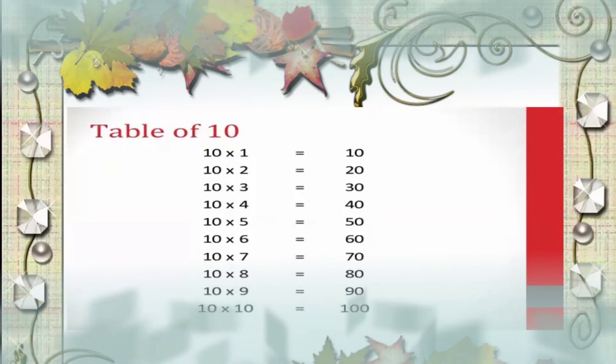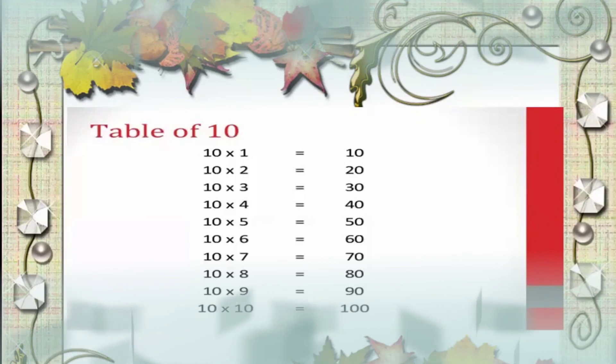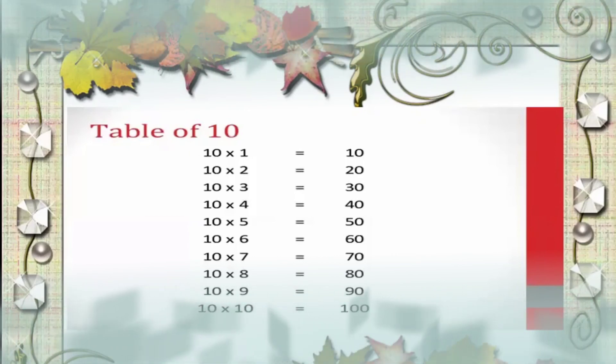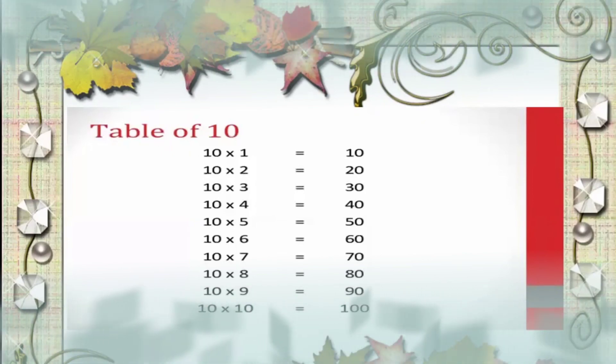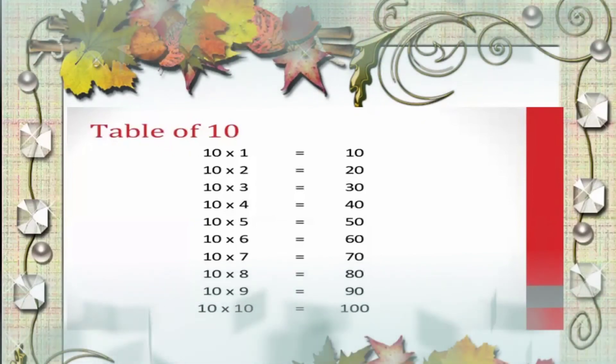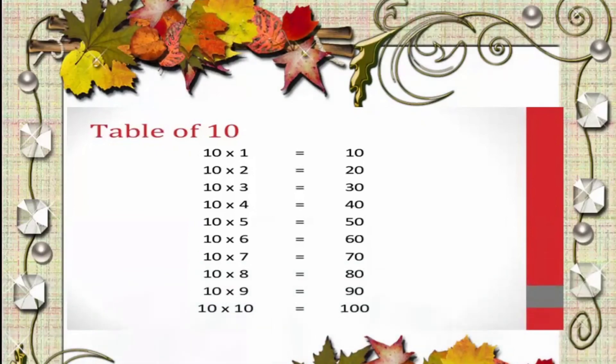Let us repeat. 10 2s are 20, 10 3s are 30, 10 4s are 40, 10 5s are 50, 10 6s are 60, 10 7s are 70, 10 8s are 80, 10 9s are 90.